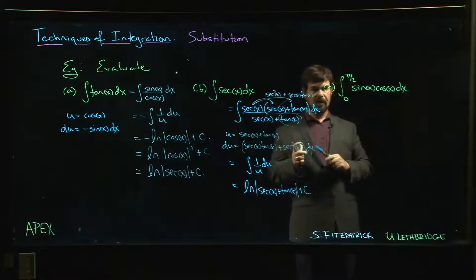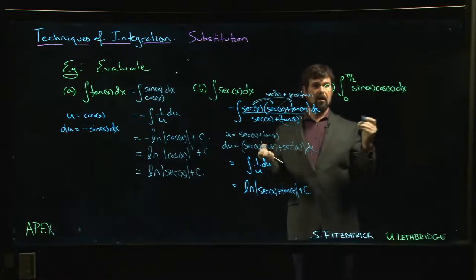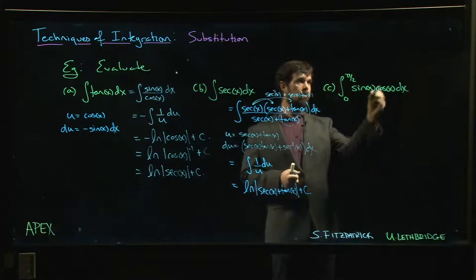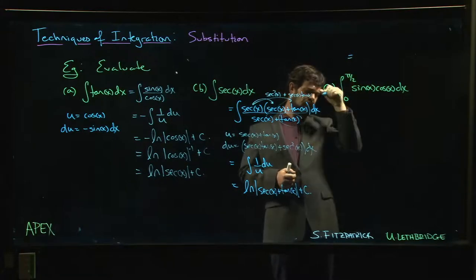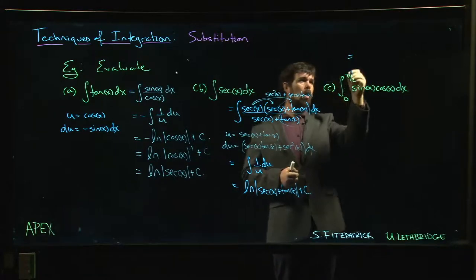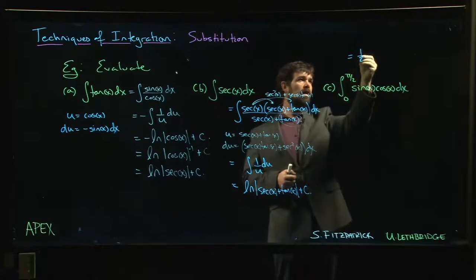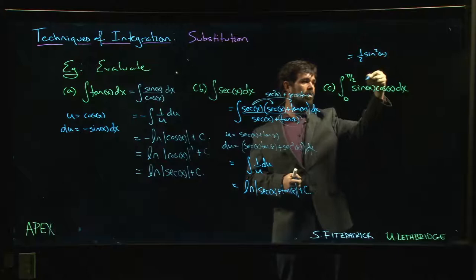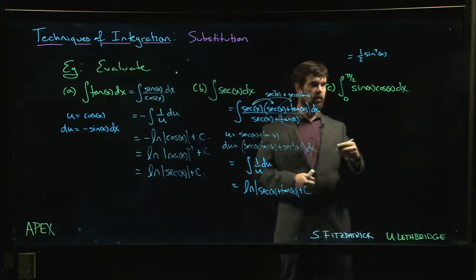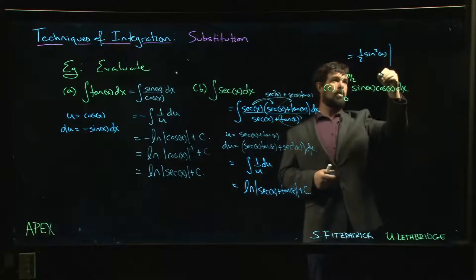We've done the indefinite integral already. So having done the integral already, we could just do this. We could say, okay, we did this, and the answer was the antiderivative, the indefinite integral, was half sine squared x plus c. But when we're doing the definite integral, we don't worry about the plus c.